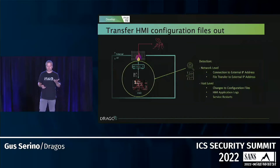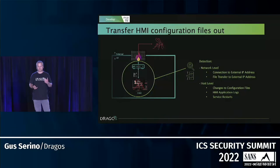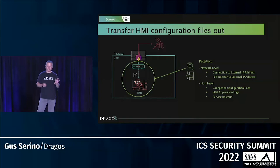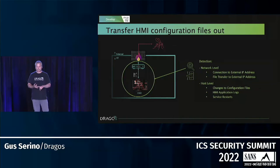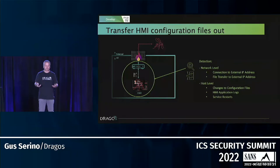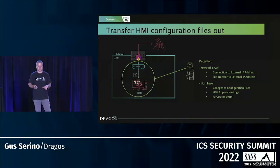For detection during the exfiltration phase: look for connections and file transfers to external IP addresses, check whether that's normal for your HMI, and look for changes in configuration files. HMI application logs are a really good source of information to include in your collection management framework — they record user logins, set point changes, configuration changes, and more. Also watch for service restarts: when configurations change, you often need to restart the service, and an unexpected restart may indicate something is up.